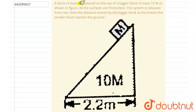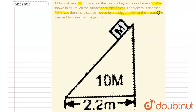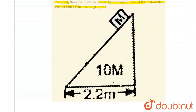Hello everyone. A block of mass m is placed on the top of a bigger block of mass 10m, as shown in the figure. All the surfaces are frictionless and the system is released from rest. We need to find the distance moved by the bigger block at the instant when the smaller block reaches the ground.